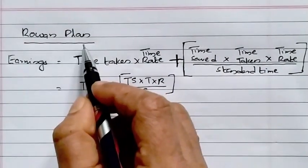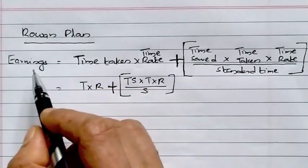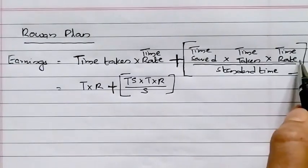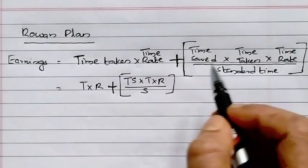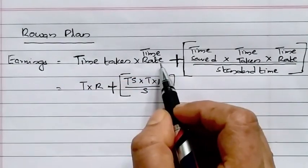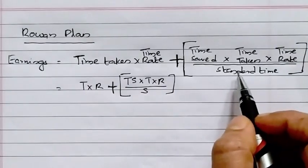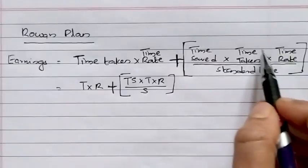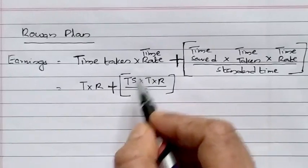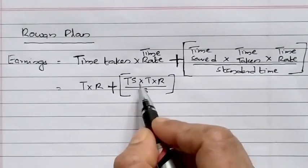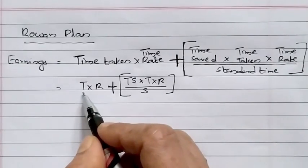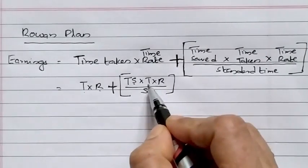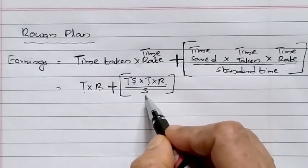The next plan is the Rowan Plan, which is the last plan under the Premium Bonus System. Under the Rowan Plan, workers get time rate wages plus a bonus for extra efforts. The formula is: Earnings = T × R + (Ts/S) × T × R, where T is the actual time taken, R is the time rate, Ts is the time saved, and S is the standard time.